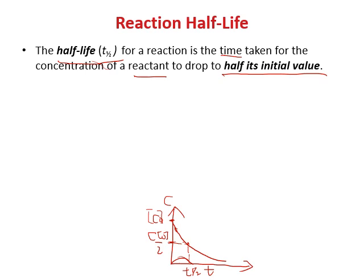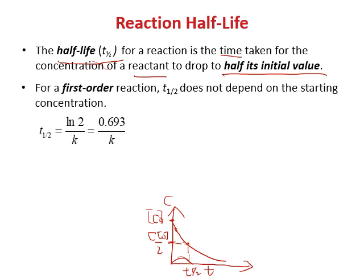For a first-order reaction, the half-life has an equation: ln2 divided by k. Notice that this equation does not have concentration — that means half-life does not depend on initial concentration. ln2 is also 0.693, so half-life is also 0.693 divided by k.